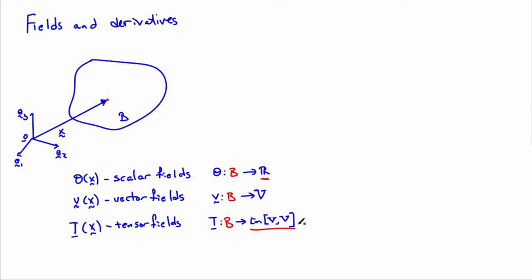And one of the most important things that we need to be able to do with fields is calculate their derivatives with respect to position. So we'd like to know how various field quantities vary from point to point, and how fast they vary from point to point.